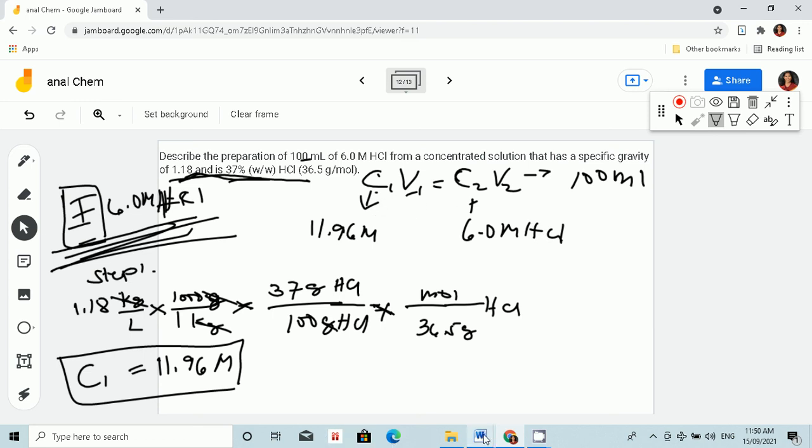We are given C1, C2, and V2, so we are going to find V1. If you have this initial concentration which is 11.96 molar, how did you prepare 100 ml of 6 molar HCl? Let's find V1. V1 is equal to C2 V2 over C1. I just rearranged the equation to solve for V1.